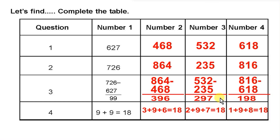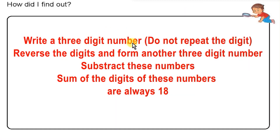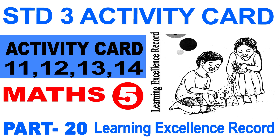This always gives 18 to our students. Write a three-digit number, do not repeat the digits, reverse the digits, subtract the numbers — the sum of the digits is always 18. I am curious about these numbers. If you have any questions, do not forget to comment. If you liked the class, please like and share with your friends. Please subscribe to our channel.